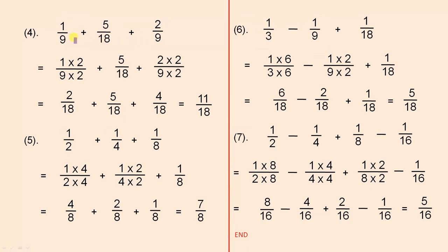The next one. 1 over 9 plus 5 over 18 plus 2 over 9. What do we need to multiply 9 by to get 18? By 2. We also multiply that denominator by 2 to give us 18. So that's the next line of working.